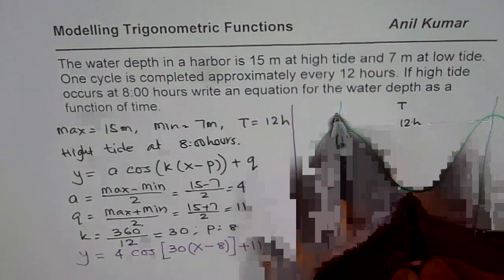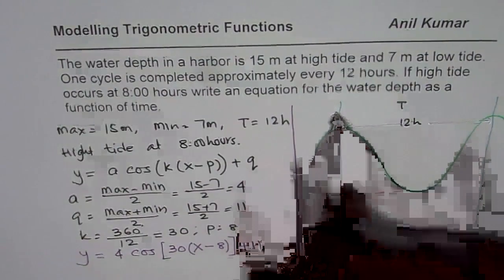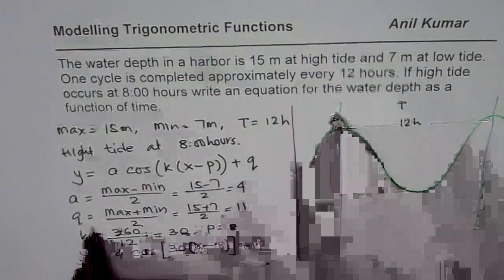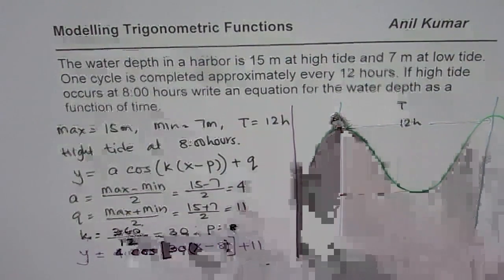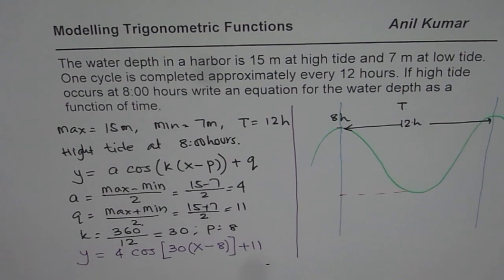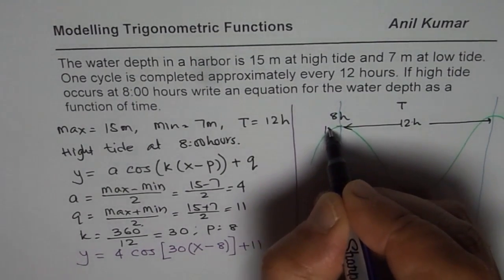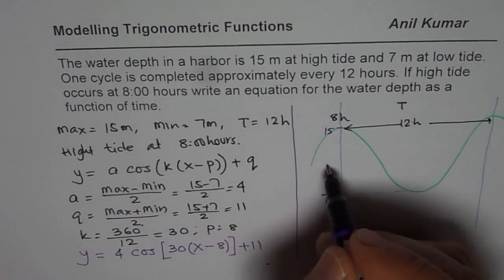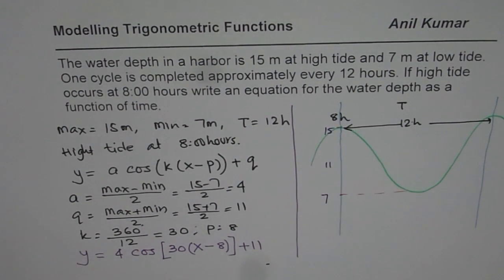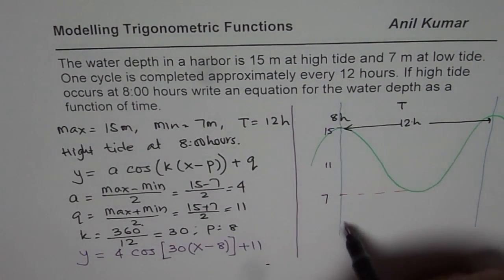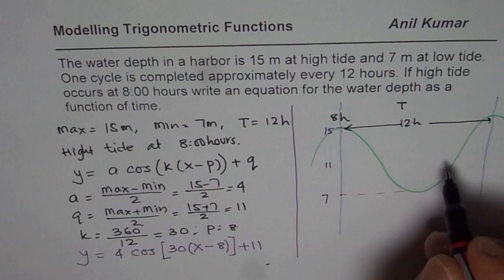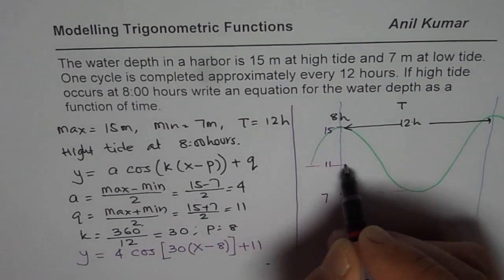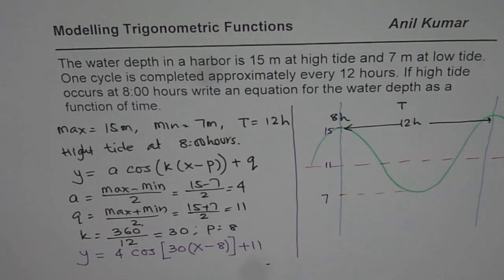Now this peak occurs at 8 hours. I am not really working on maximum and minimum, but we will draw the axis. Let me write it down. Let me write down maximum and minimum also. Let us say this is 15 and that minimum is 7. And at 11 we have the mean value. I am not saying this is my y axis. This is 8 hours. So that is my axis at 11.